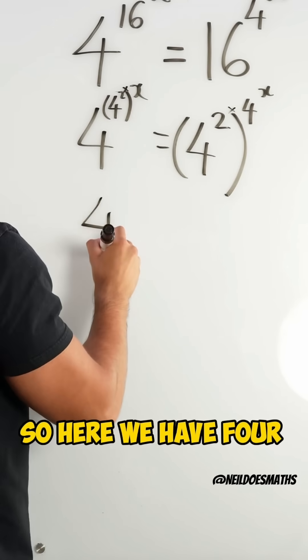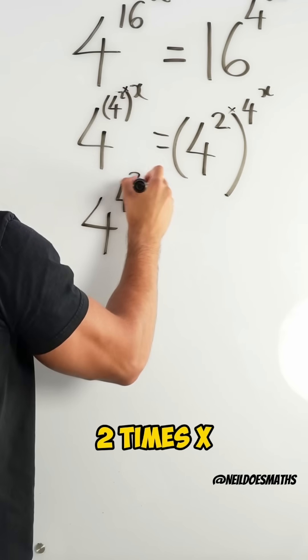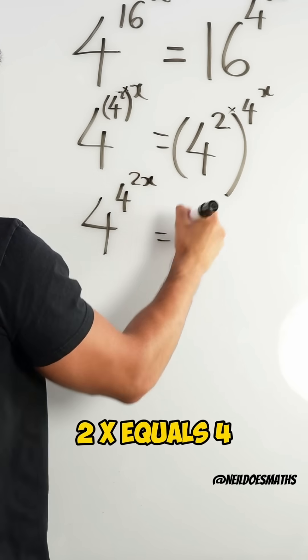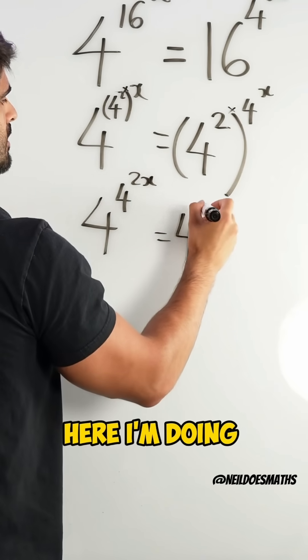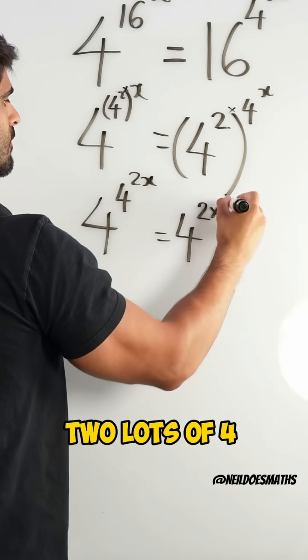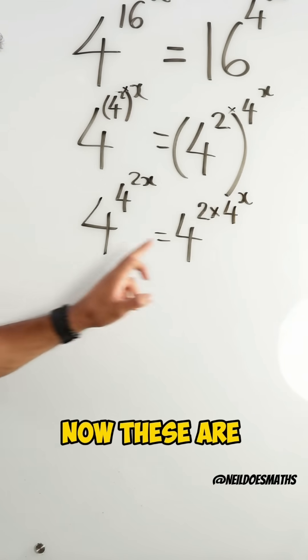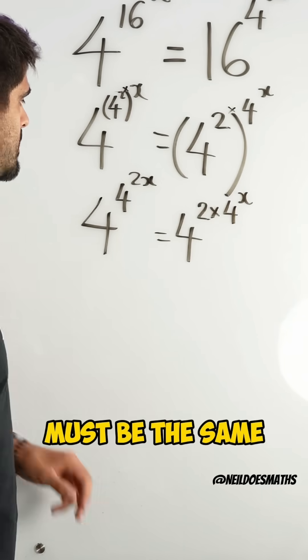So here we have 4 to the power of 4 to the power of 2 times x, which is just 2x, equals 4. Here I'm doing 2 lots of 4 to the power of x. Now these are the same base.